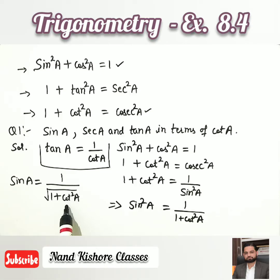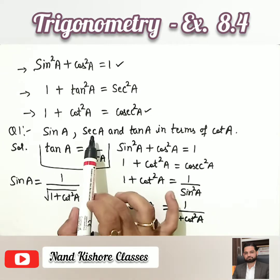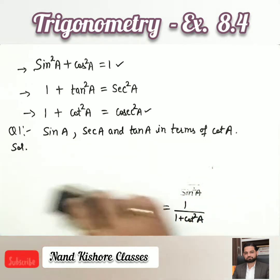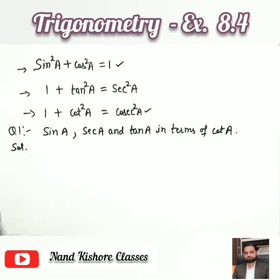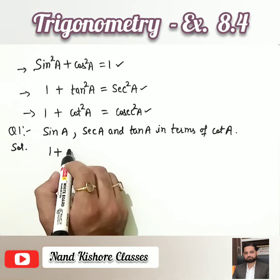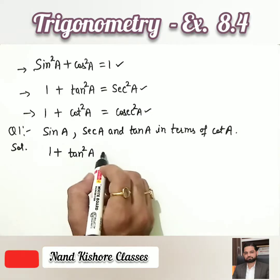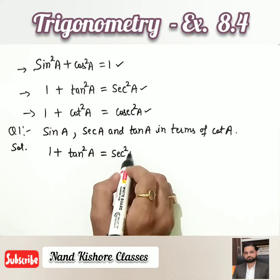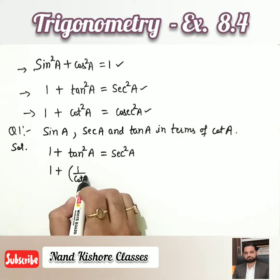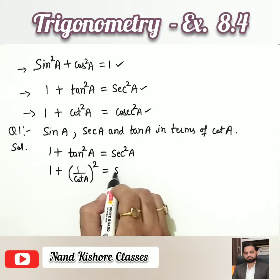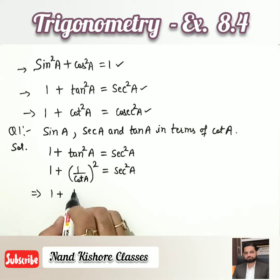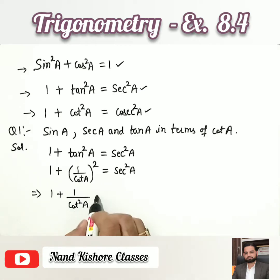Now we need to find sec A. We use the middle formula: 1 + tan²A = sec²A. tan A can be written as 1/cot A, so squaring gives 1/cot²A. Therefore: 1 + 1/cot²A = sec²A.